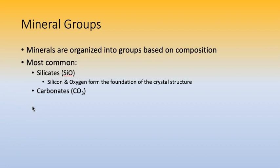Mineral groups. Minerals are organized into groups based on their composition — meaning the elements that have chemically bonded together to make up the mineral crystal. The most common group of minerals found in rocks are the silicates. These utilize the two most abundant elements in Earth's crust: oxygen and silicon. From this foundation, other elements bond to create other minerals. Altogether, there are over 4,000 minerals on Earth, but only a couple dozen are commonly found in rocks.